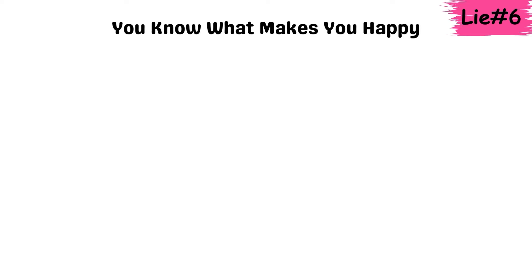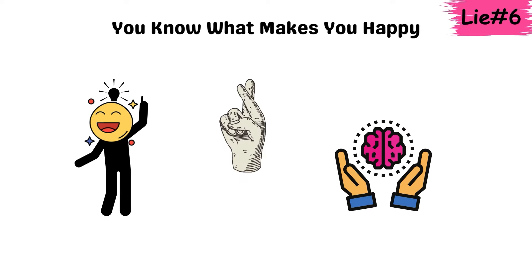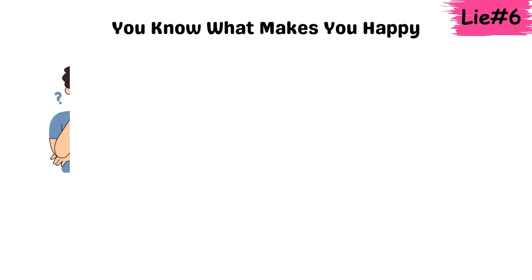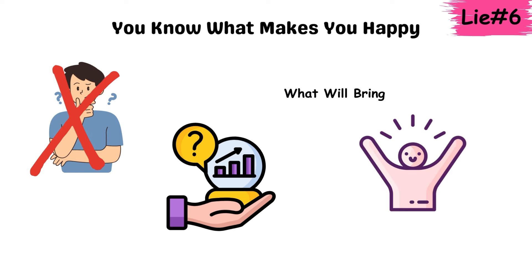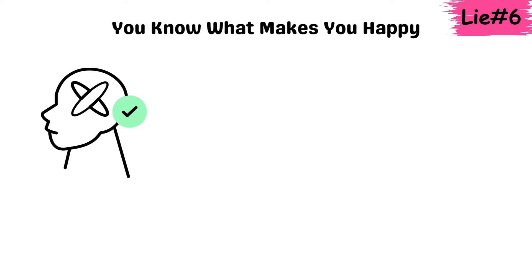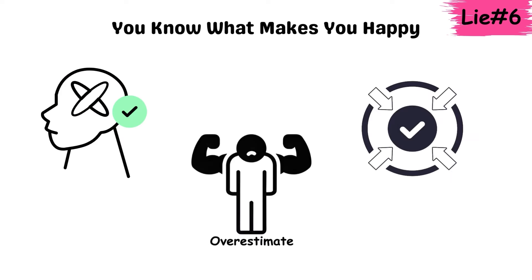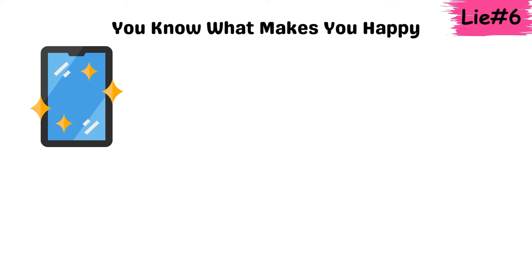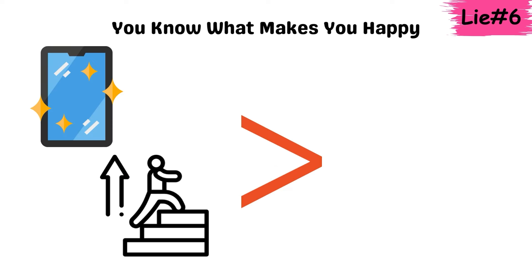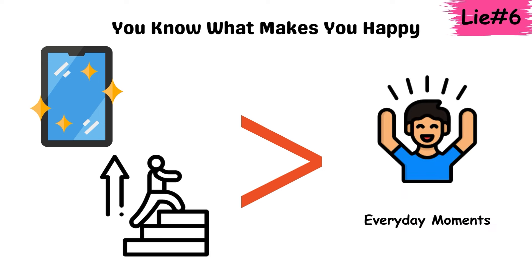Lie 6. You know what makes you happy. The idea that we know exactly what will make us happy is often a lie our brain tells to create a sense of control. But in reality, humans are notoriously bad at predicting what will bring lasting happiness. Psychological studies show that we tend to overestimate the impact of positive events, like buying a new phone or landing a promotion, while underestimating the joy of smaller, everyday moments.